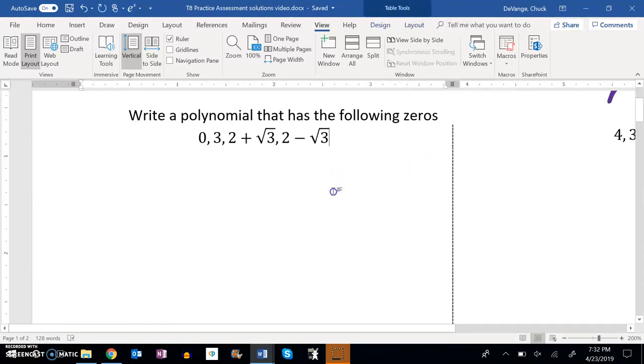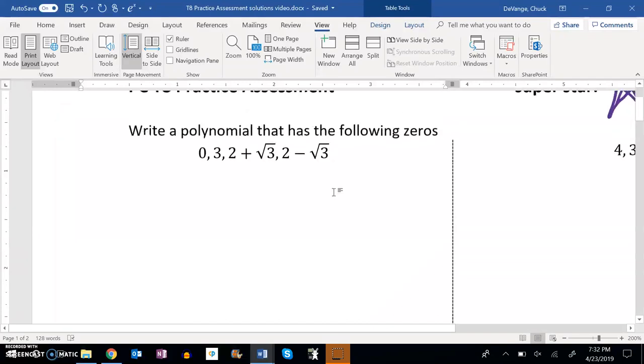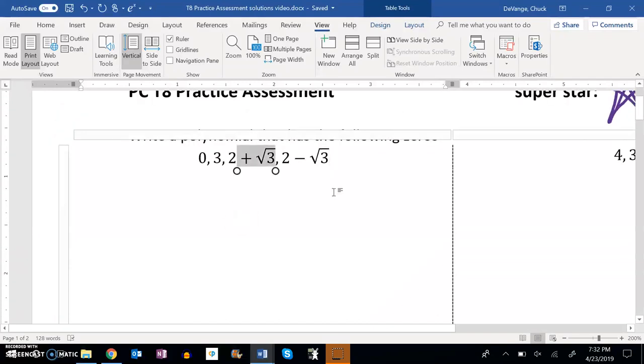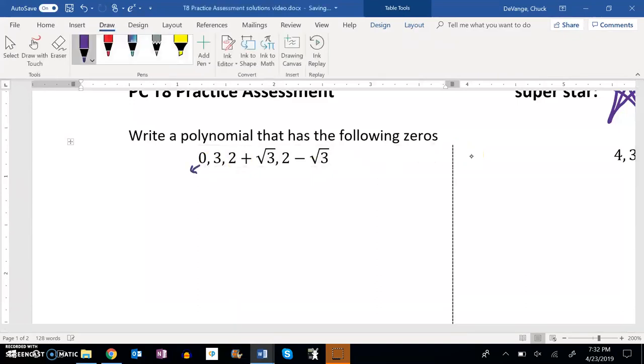This is pre-calc and we're going to do a video here for the practice assessment. This is the first problem: write a polynomial that has these zeros. So let me think about this. If zero is a zero, that would have come from x. If 3 is a zero, that would have come from x minus 3.